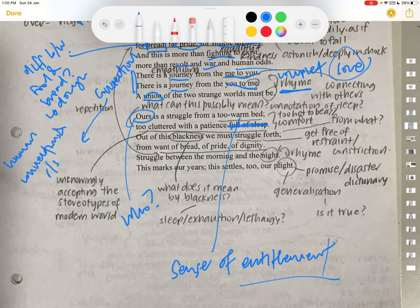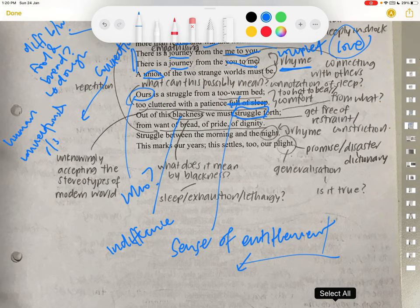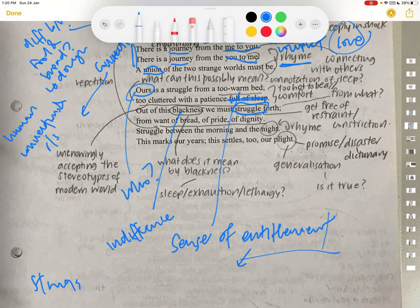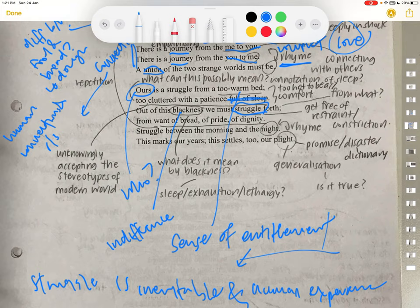Out of this blackness, we must struggle for. So what is the blackness? Is it the indifference to all these world sufferings? We must struggle forth. So again, the idea of struggling. So essentially, the poet perhaps is trying to say that even people who are entitled, who are very fortunate, they also have struggles. So perhaps the poet is trying to say struggle is inevitable and part of the human experience. Just that it exists in different forms for different people.